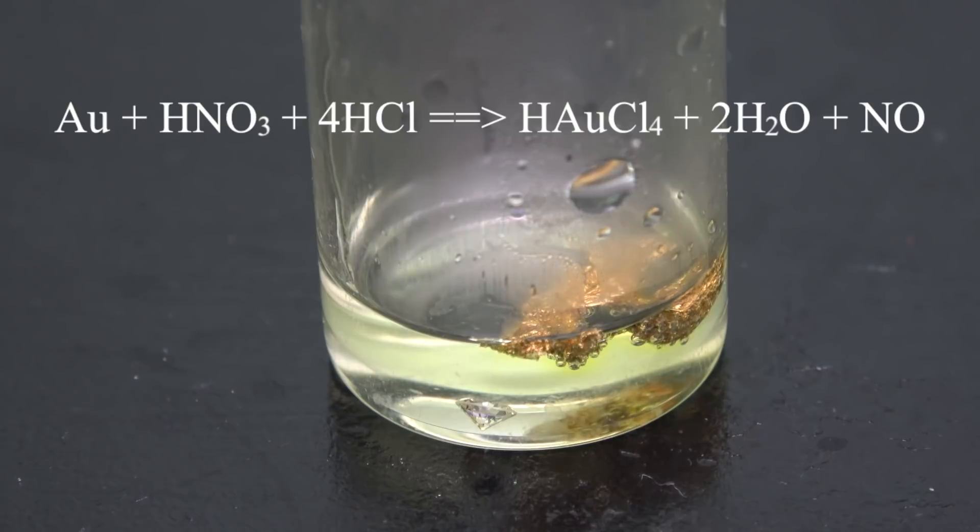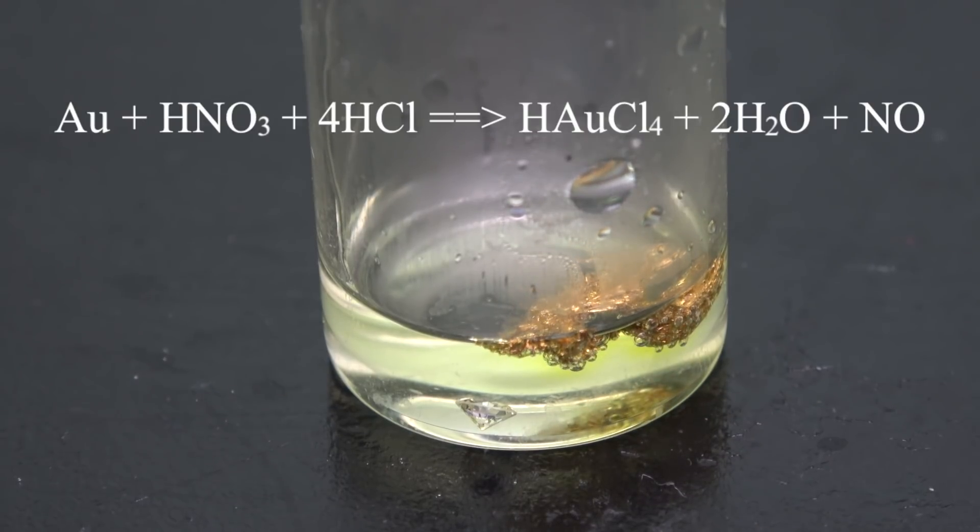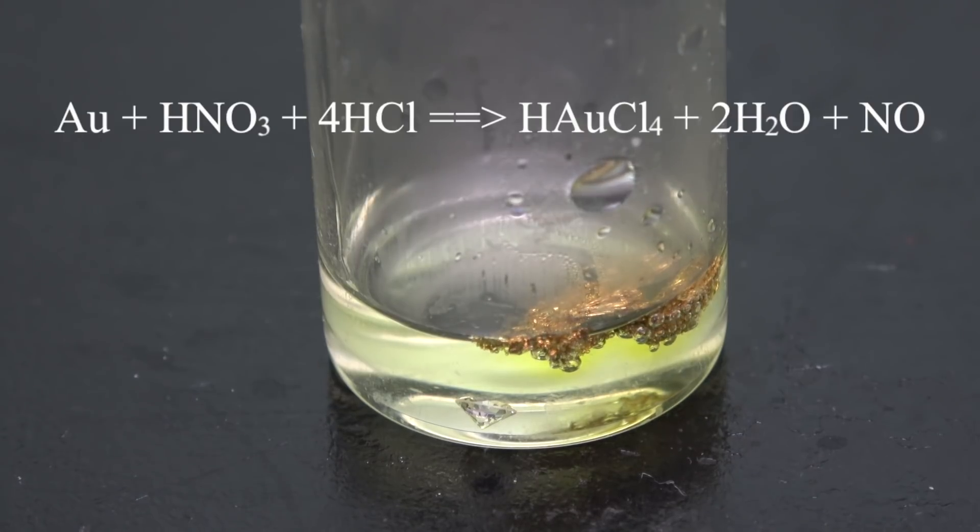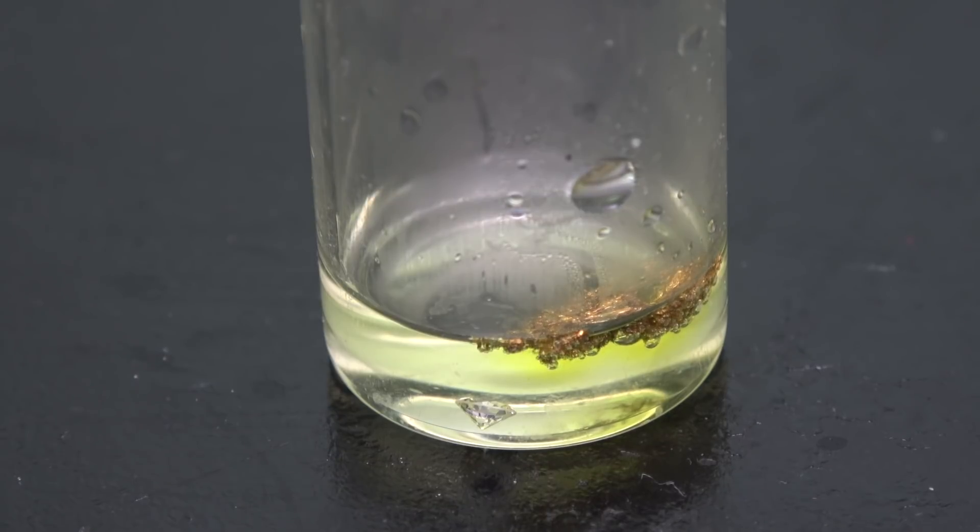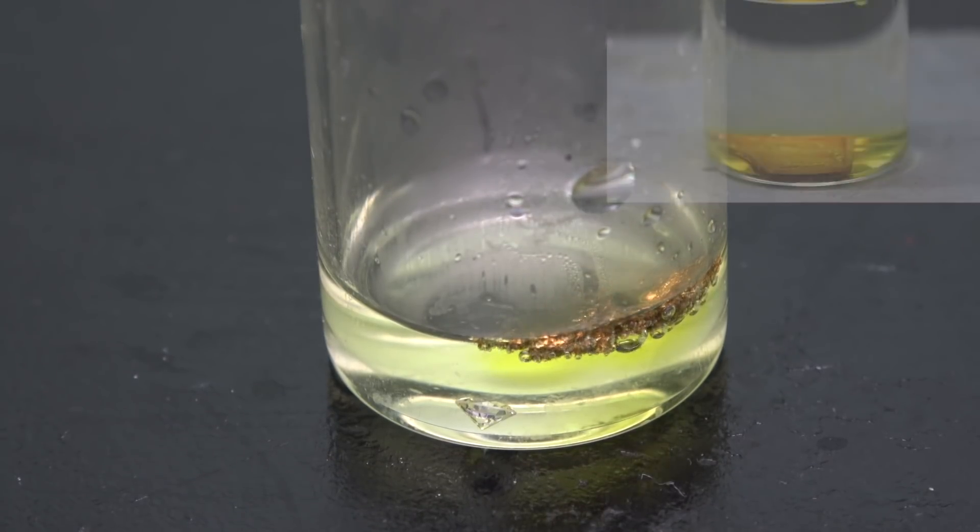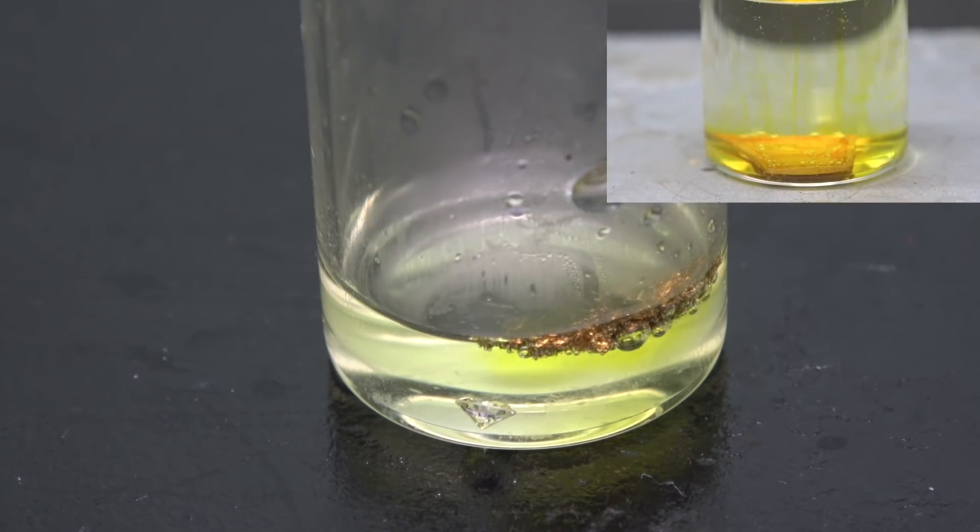Basically, the gold is reacting with hydrochloric acid and nitric acid to make chloroauric acid, along with water and nitrous monoxide. Well, what is actually happening is way more complicated than just this, but I'm not going to go into too much detail in this video. That is topic for another day.